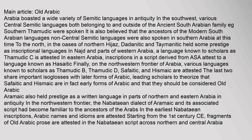In the oases of Northern Hiyas, Dadanitic and Tamanitic held some prestige as inscriptional languages. In Najd and parts of Western Arabia, a language known as Thamidic C is attested. In Eastern Arabia, inscriptions in a script derived from Asa attest to a language known as Hasaidic. On the northwestern frontier, various languages known as Thamidic B, Thamidic D, Seifetic, and Hismaic are attested. The last two share important isoglosses with later forms of Arabic, leading scholars to theorize that Seifetic and Hismaic are in fact early forms of Arabic — Old Arabic. Aramaic also held prestige as a written language in parts of Northern and Eastern Arabia.